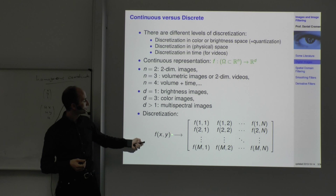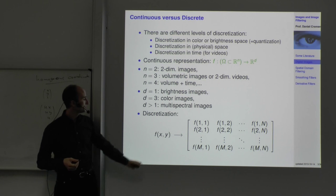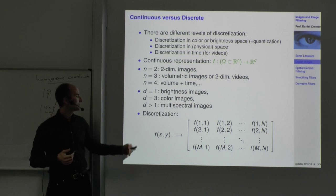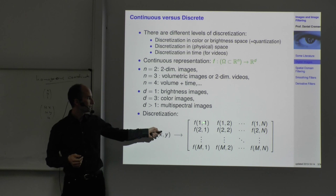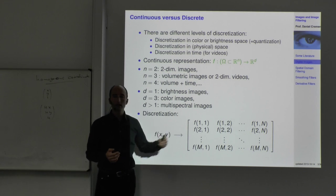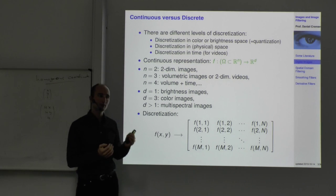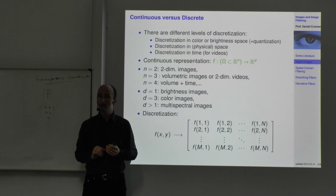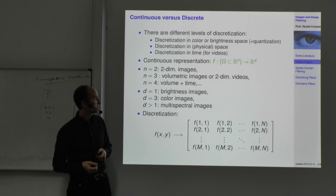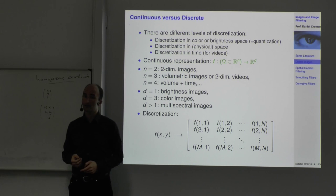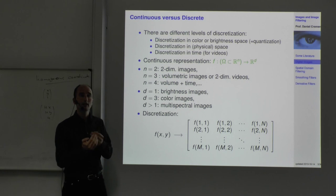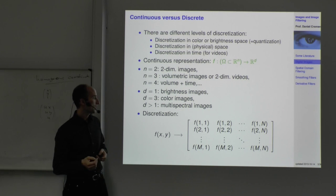For images in R^2, we have coordinates x and y. Once we discretize, we get values at discrete pixels like (1,1), (1,2), giving an array of values. The function values are also discrete — for example in the range 0 to 255 — depending on the image format. There are many different image formats, varying by whether they're brightness or color images and how they are resolved.